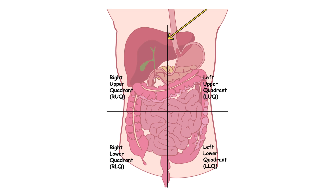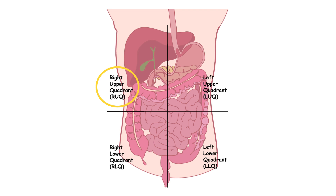These form the right upper quadrant, or RUQ, which contains the liver, gallbladder, part of the pancreas, and parts of the small and large intestines. The left upper quadrant, LUQ, houses the stomach, spleen, part of the liver, pancreas, and parts of the intestines.